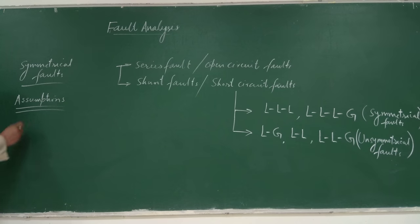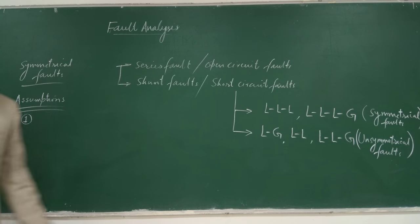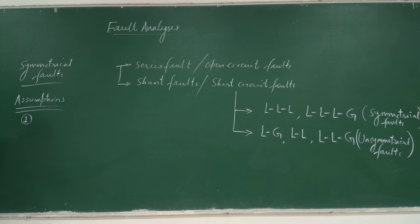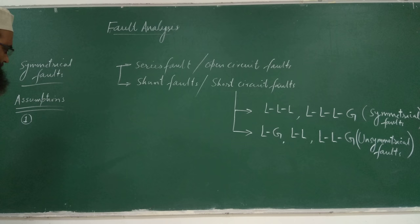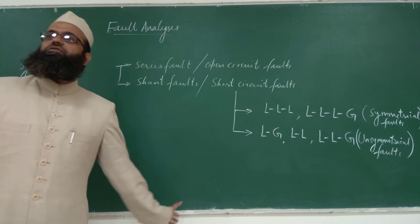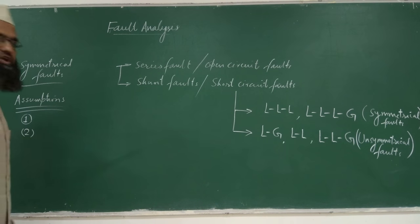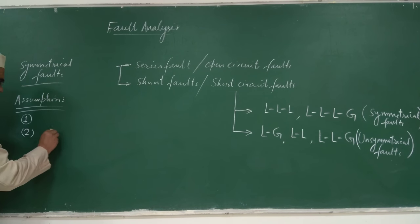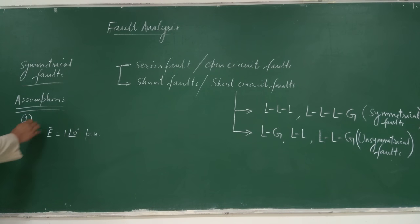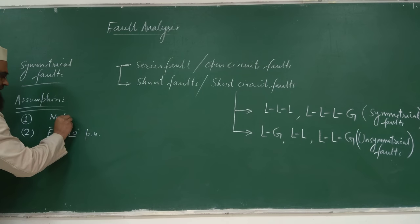Let us write the assumptions involved while calculating symmetrical faults. Assumption number one: we assume that at the time of the fault, the system was operating at no load. This means there is no load current — all pre-fault currents before the occurrence of the fault are zero.